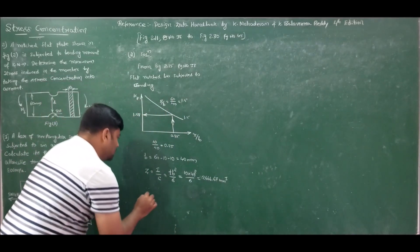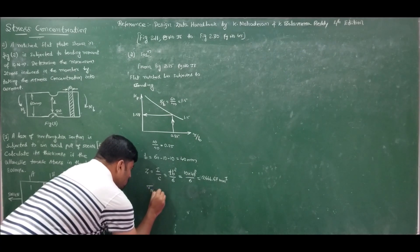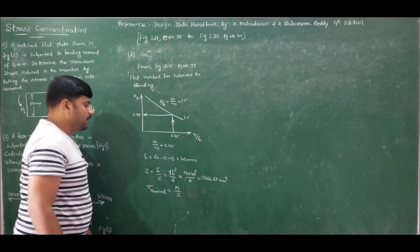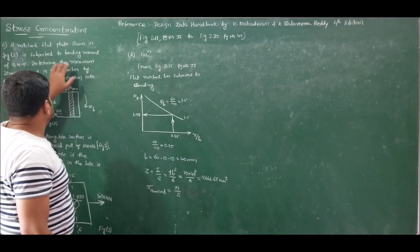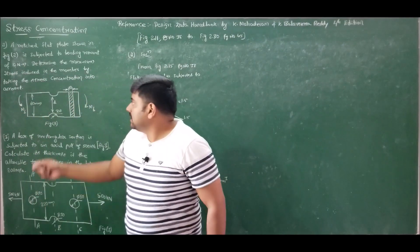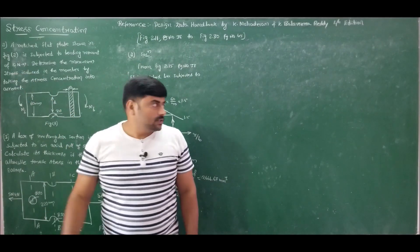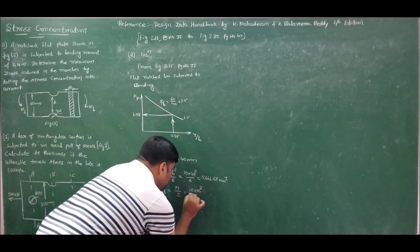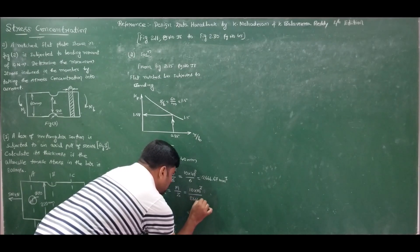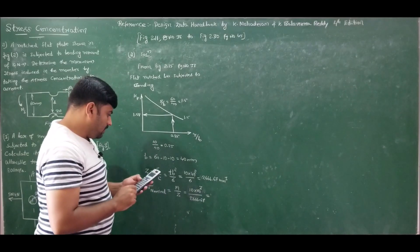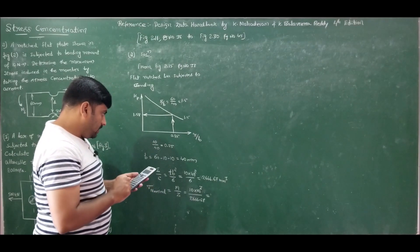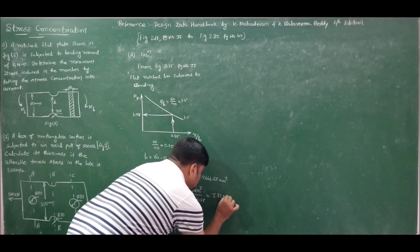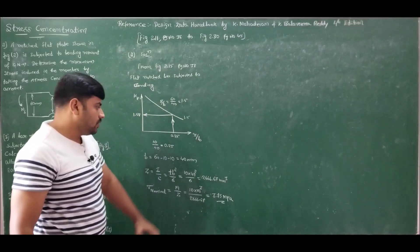The nominal stress for pure bending is σ_nominal = M/Z. The bending moment is given as 10 Nm, which equals 10 × 10³ = 10,000 N·mm. Dividing by Z = 2666.67 mm³, we get σ_nominal = 10,000 / 2666.67 = 3.75 MPa.